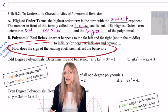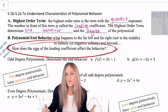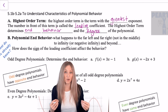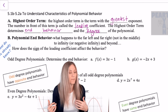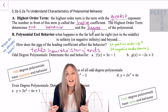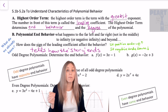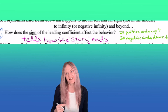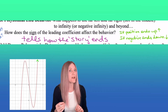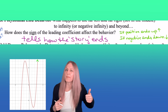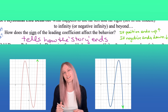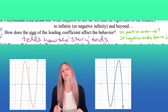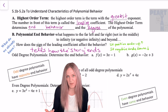How does the sign of the leading coefficient affect end behavior? Remember when I was reading my book and wanted to flip to the end to determine if it ended positive or negative, happy or sad — that's what the sign of the leading coefficient does for our polynomial end behavior. If the leading coefficient is positive, the end behavior ends up. If it's negative, the end behavior ends down.